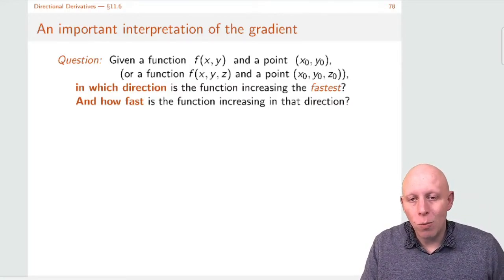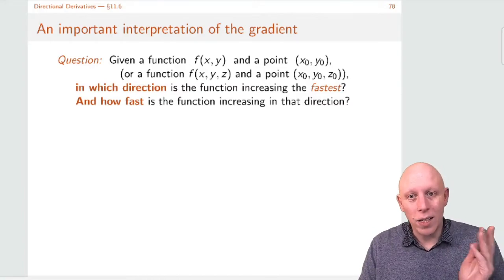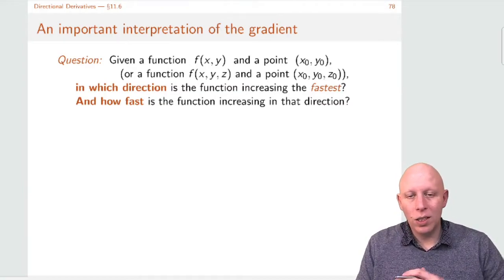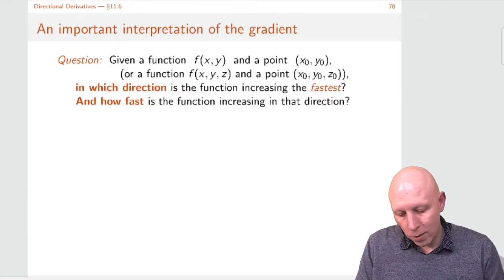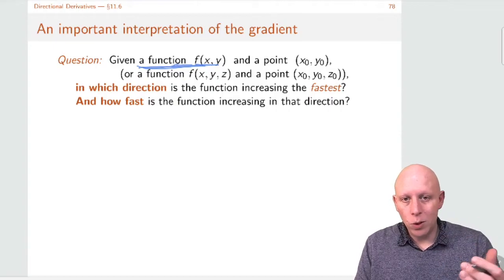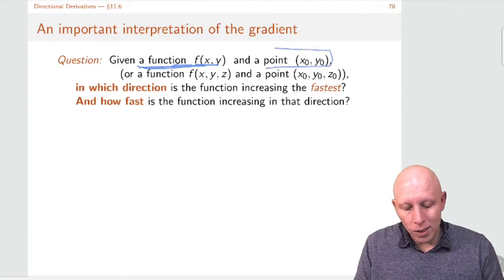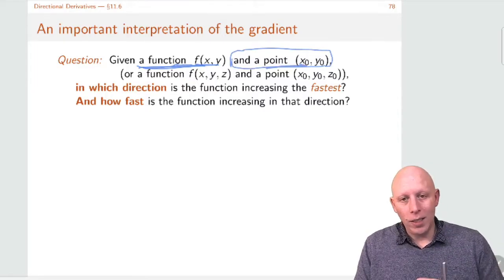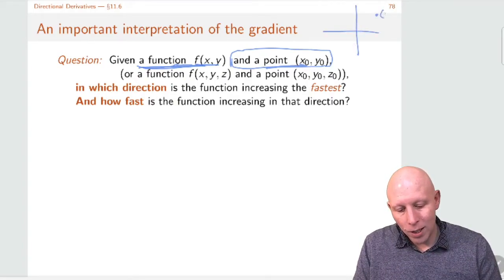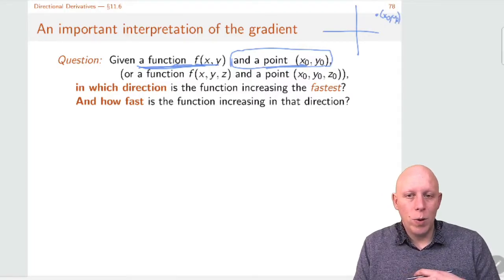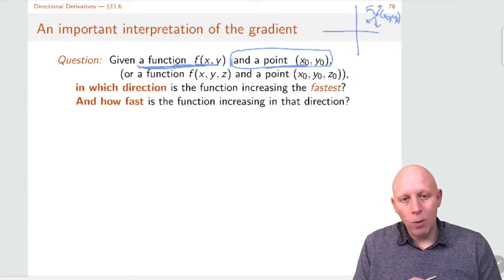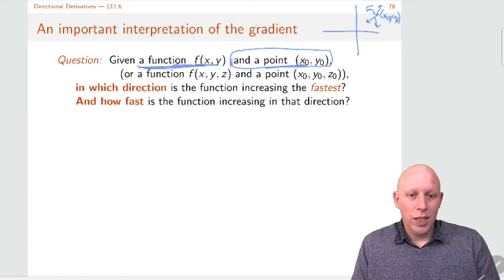Hi, welcome back. What we'd like to talk about today is this gradient vector — what's a good way to think about it? So here's the motivating question: let's say we have some function f of x, y, a function of two variables, and we're at some point in the plane — here we are at x-naught, y-naught. We want to ask: if we're here, which is the right direction to walk in that will make the function value increase as fast as possible?